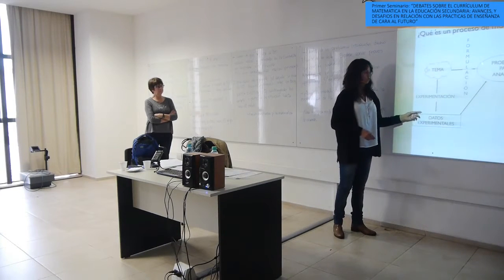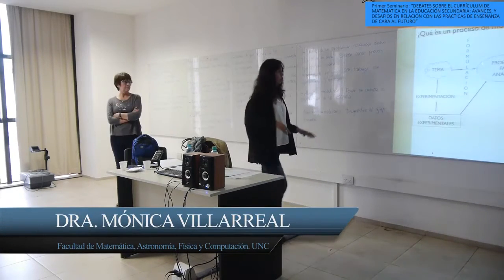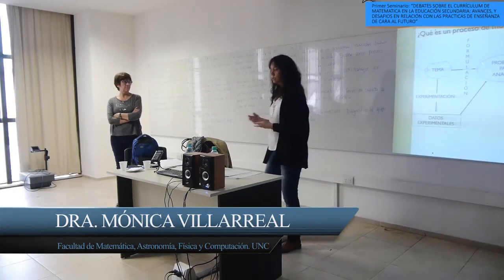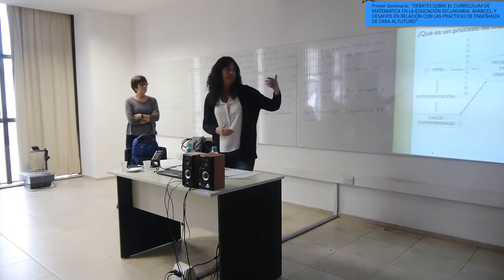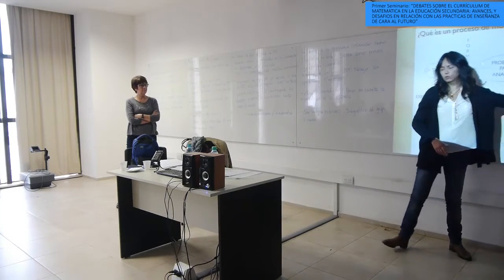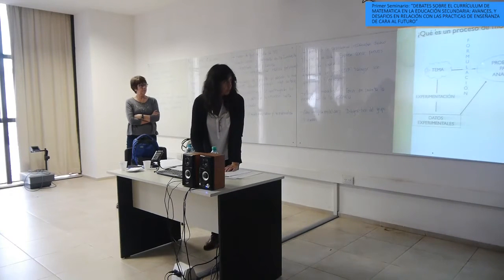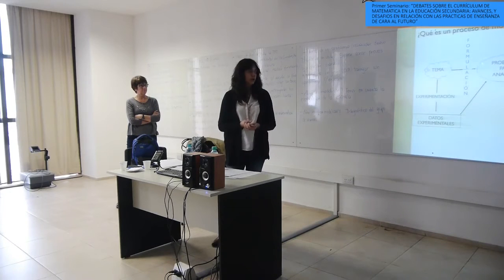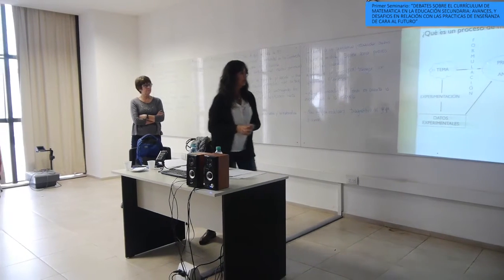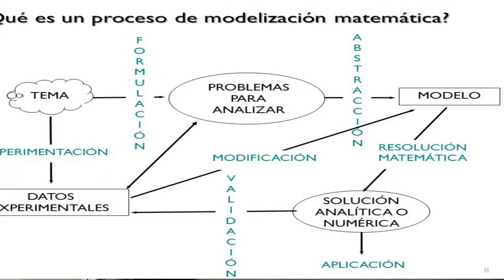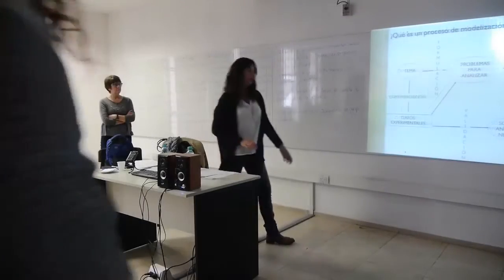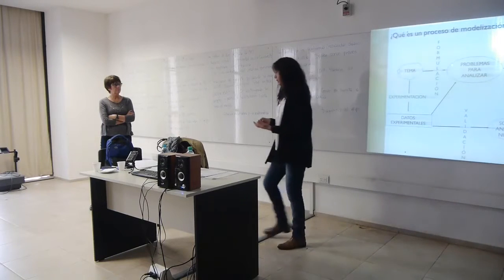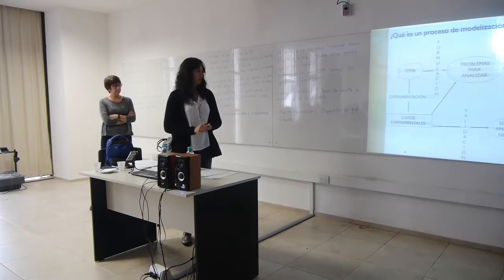Para dar cuenta del problema puedo necesitar recoger datos, para lo cual puedo necesitar hacer un experimento. Cuando uno tiene un problema delimitado y comienza a seleccionar variables y a pensar cómo se relacionan, comienza un proceso de abstracción, entrando en el dominio matemático para construir o proponer un modelo. Si es un modelo funcional, hay que buscar cuáles son los parámetros a través de un proceso de resolución matemática que lleva a una solución analítica o numérica, también gráfica o en tabla —distintos tipos de representación.